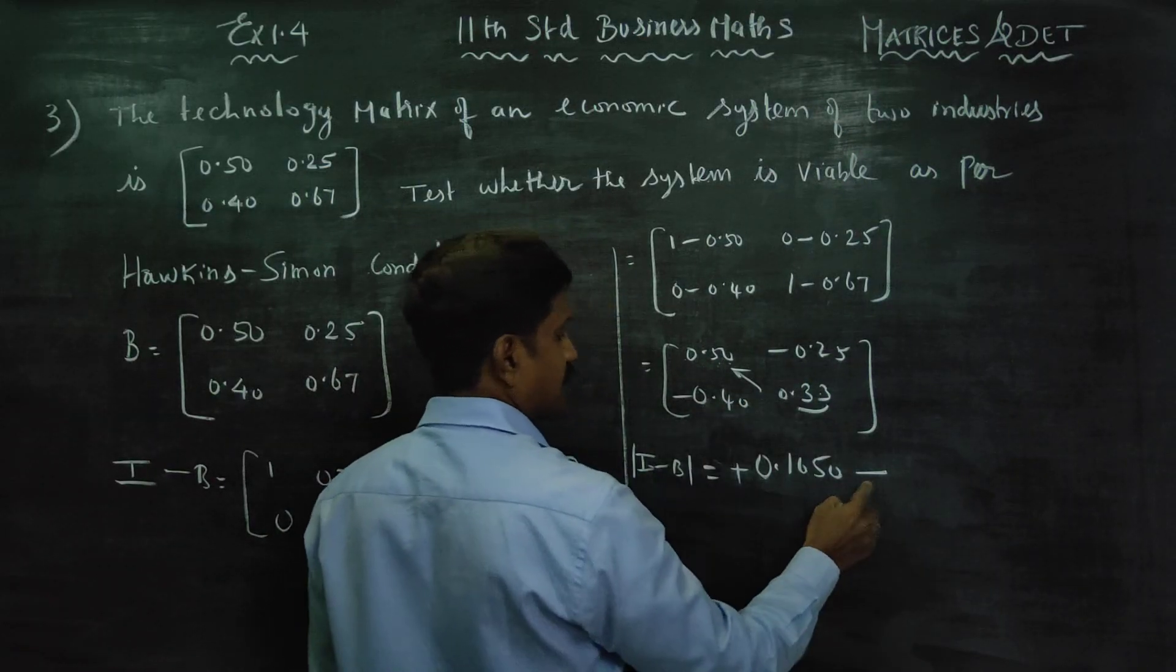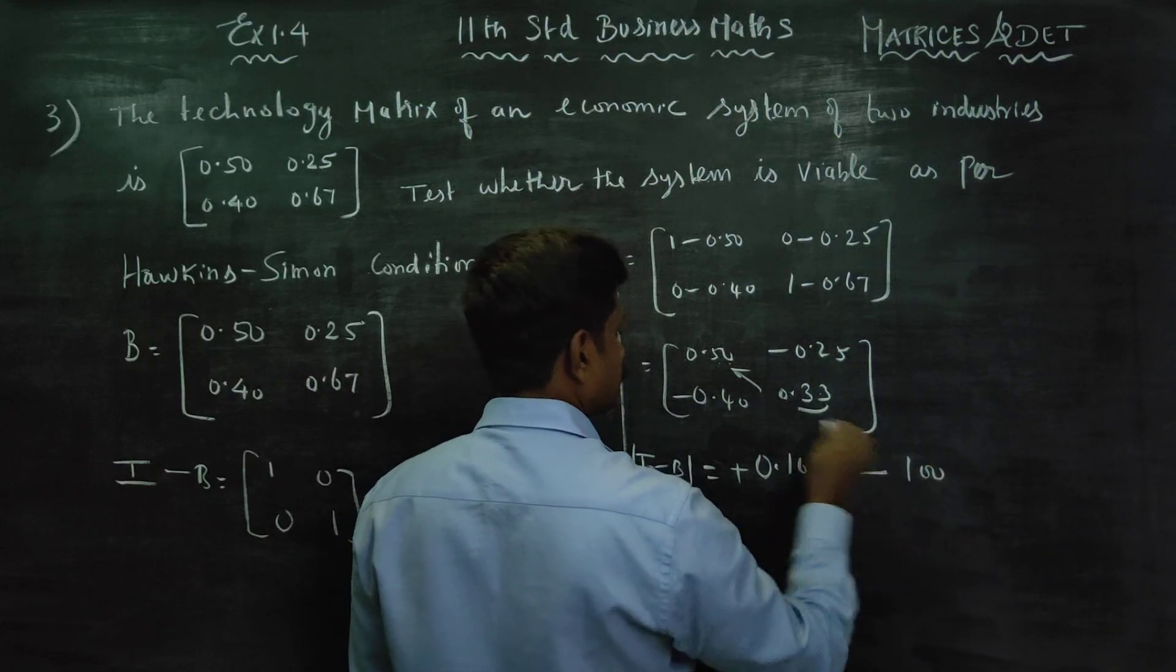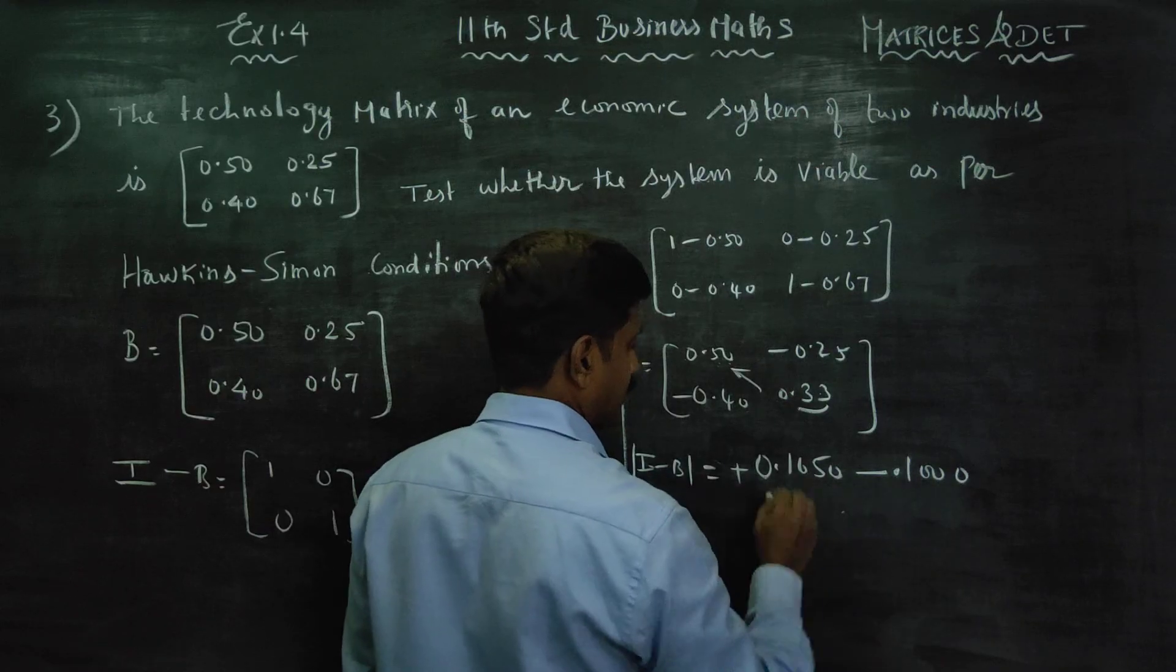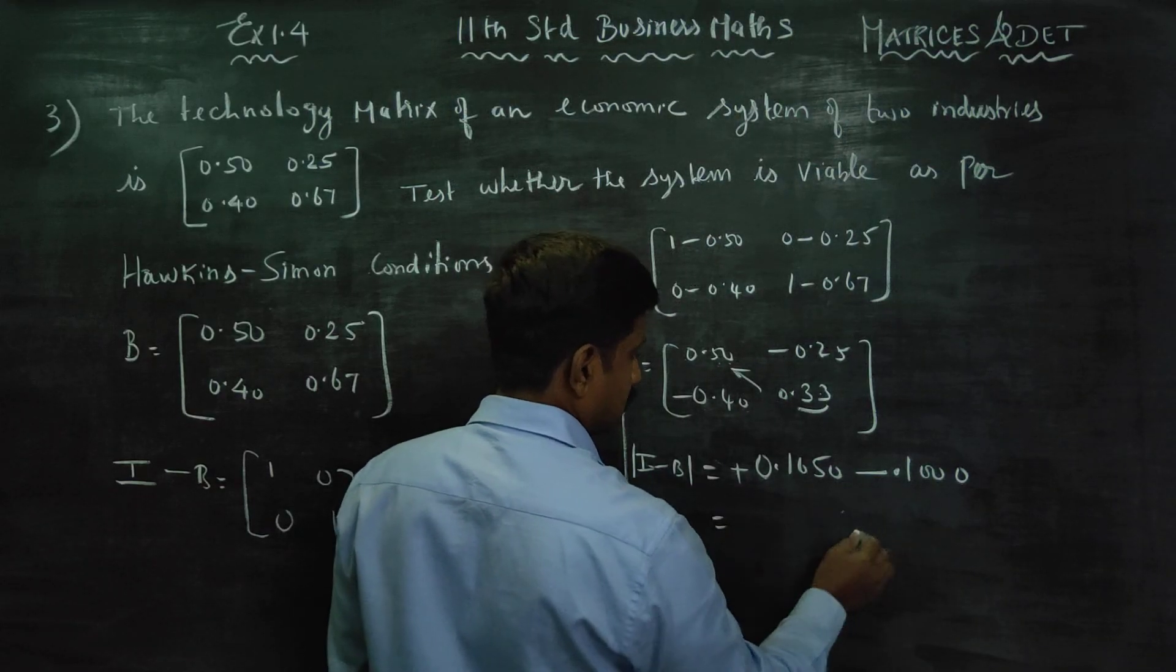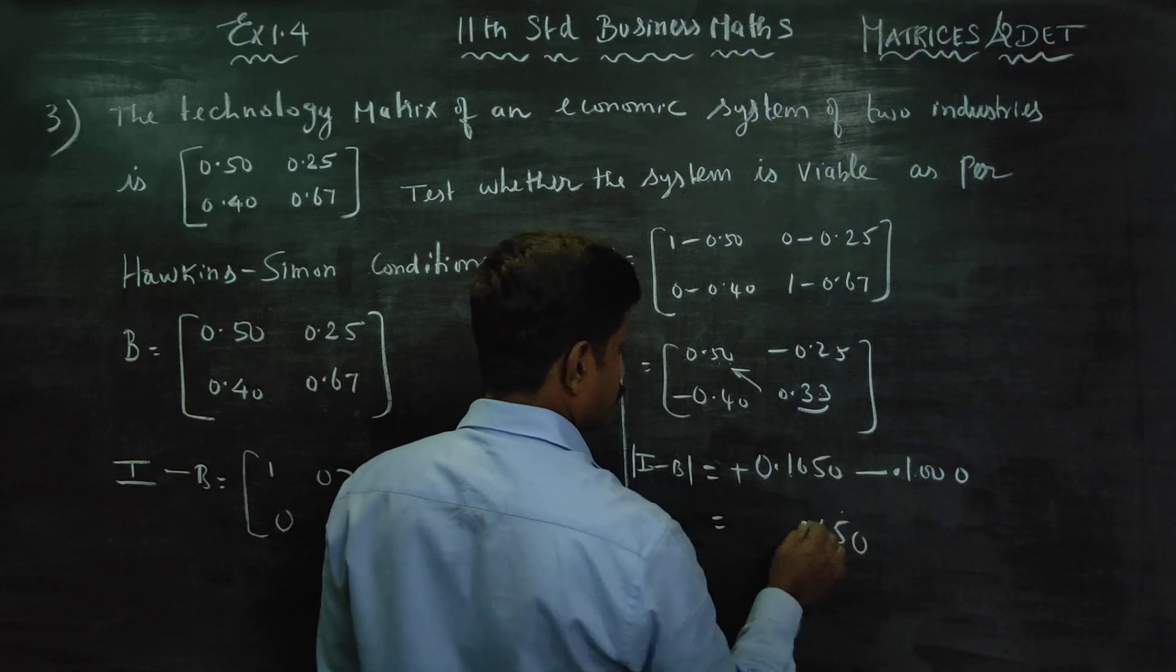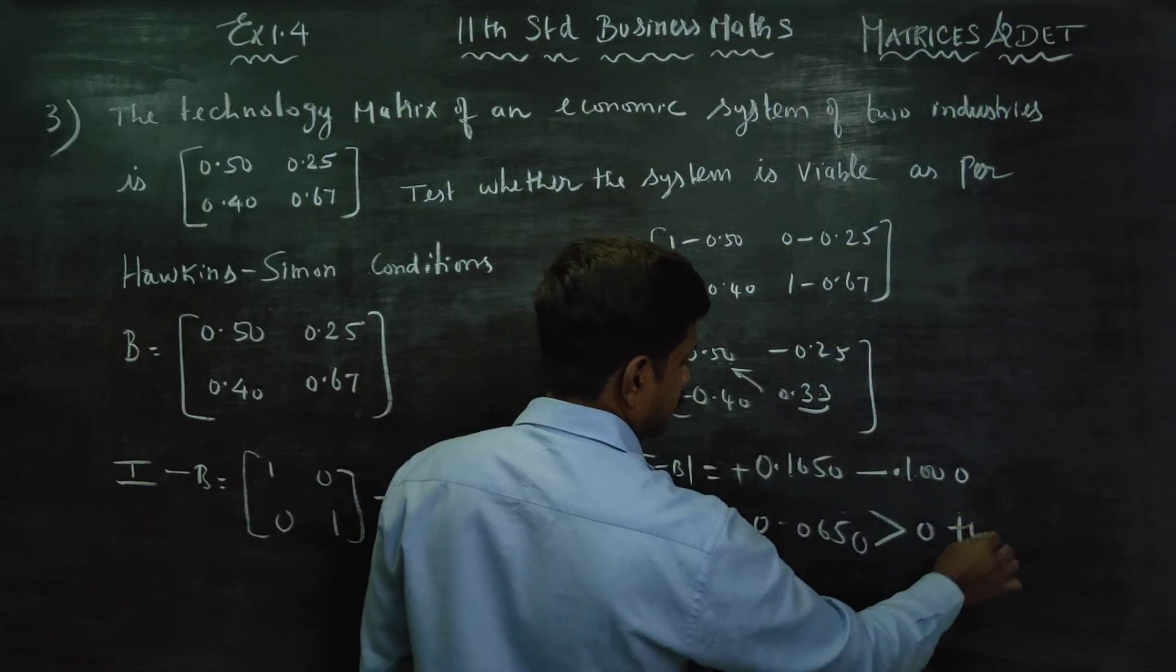Minus into minus gives plus. -0.40 times -0.25 equals 0.10. So 0.165 minus 0.10 equals 0.065, that is positive.